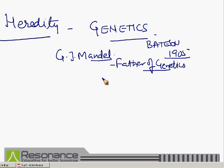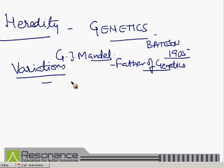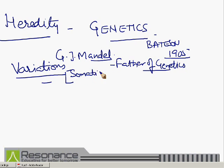The basic theme behind genetics is the study of variations. Variations are concerned with the differences between individuals of the same species, and also between offspring of the same species. Variations are broadly of two types: somatic variations and germinal variations.